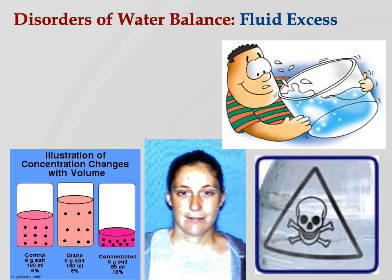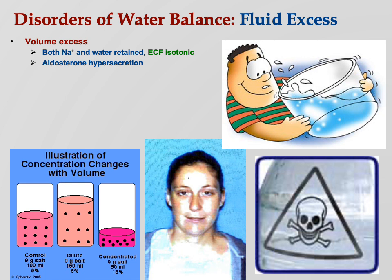Now let's talk about having too much water — fluid excess. Volume excess means both water and solutes are retained. Both sodium and water are retained, so ECF stays isotonic and we're not going to have a change in osmolarity. Aldosterone hypersecretion is an example — if you make too much aldosterone, it saves sodium, so you pull extra sodium in, and therefore extra water follows. Your total volume goes up, but not osmotic pressure, because you're pulling in solutes and water at the same time. You'll have way too much water, and blood pressure will be too high.